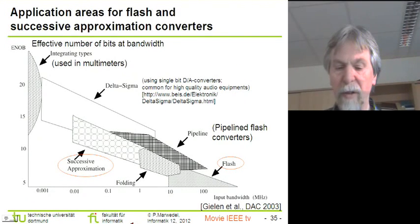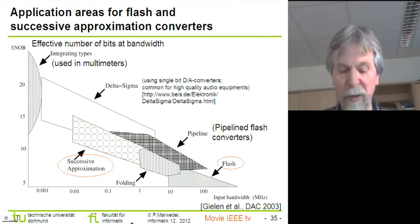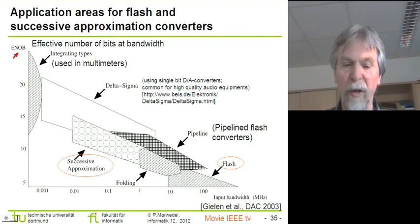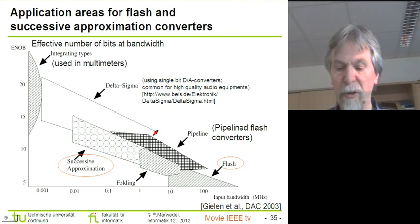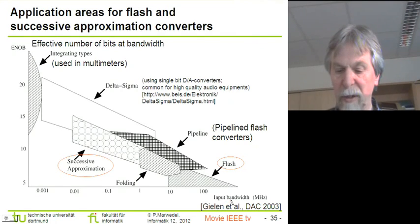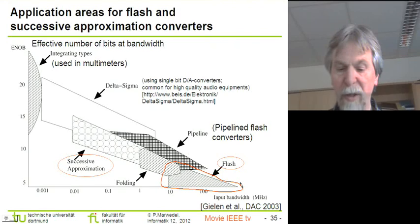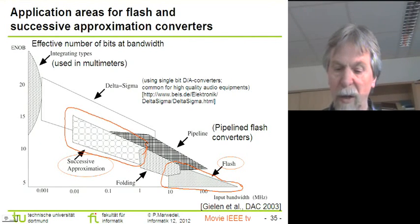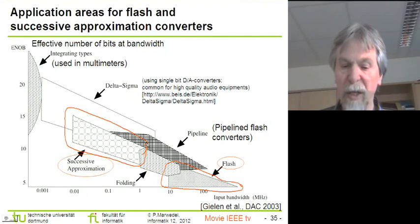This slide provides an overview of different converters that can be used in practice. We see an evaluation in terms of two important figures of merit: the effective number of bits at the bandwidth of conversion, and the input bandwidth. We see the two converters already discussed: the so-called flash converter, which is the fast converter used for video for example, and the successive approximation converter, which provides a compromise between speed and effective number of bits.